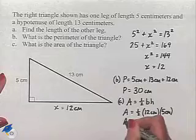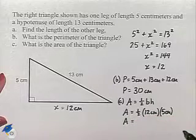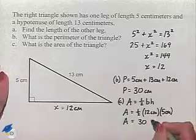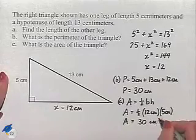So we're going to multiply 1 half times 12, which is 6, times 5, which is 30. Centimeters times centimeters is going to be square centimeters.